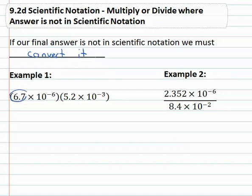We will start with the numbers. Calculator to help us, 6.7 times 5.2 is 34.84 and then we'll do the tens by adding the exponents, times ten to the negative six plus negative three is negative nine.